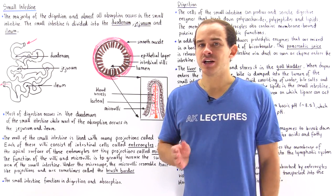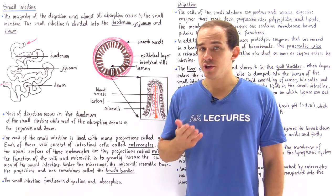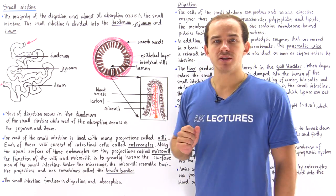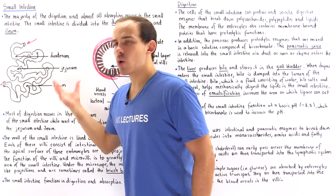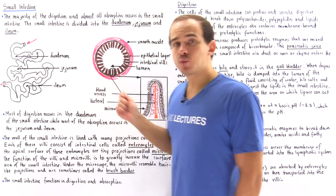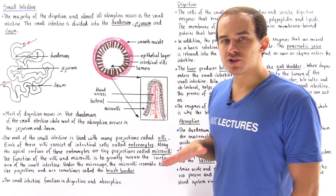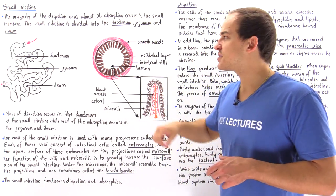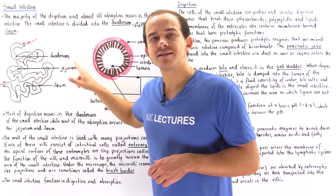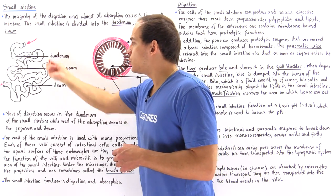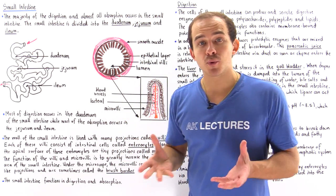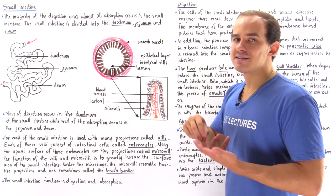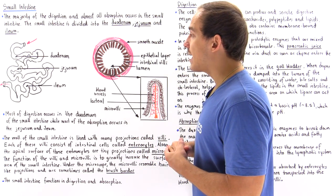The majority of digestion and almost all absorption in the human body takes place in a digestive organ known as the small intestine. The small intestine can be broken down into three sections. The beginning portion is where digestion actually takes place, known as the duodenum. Within the duodenum we have the breakdown of macromolecules into amino acids, fatty acids, and monosaccharides.